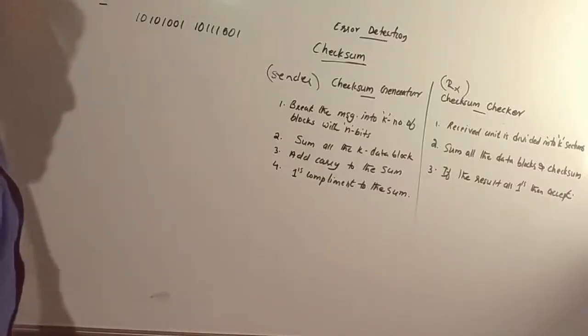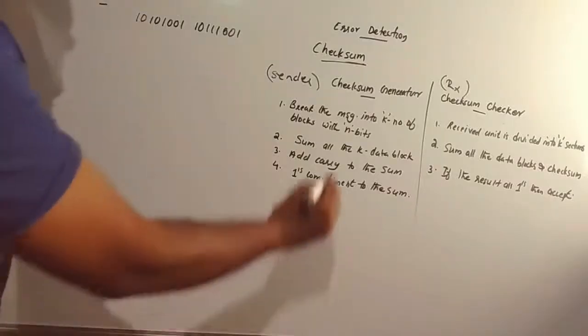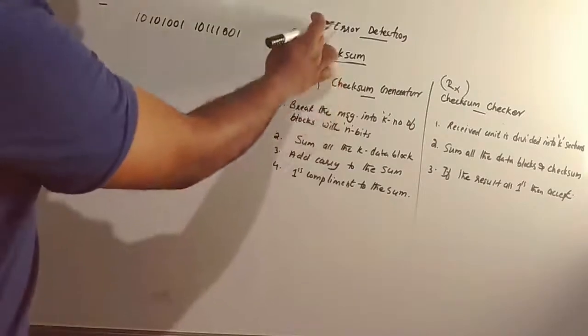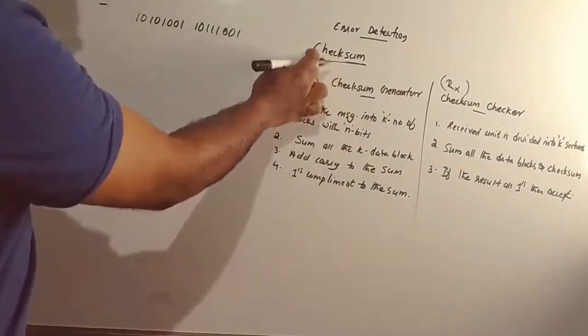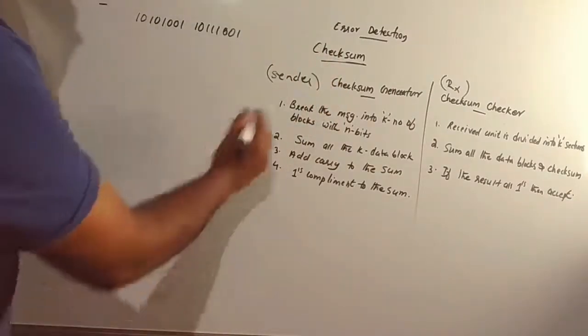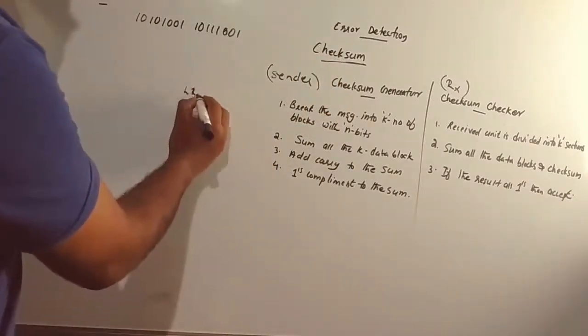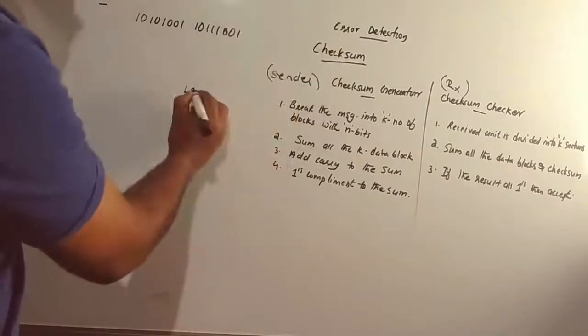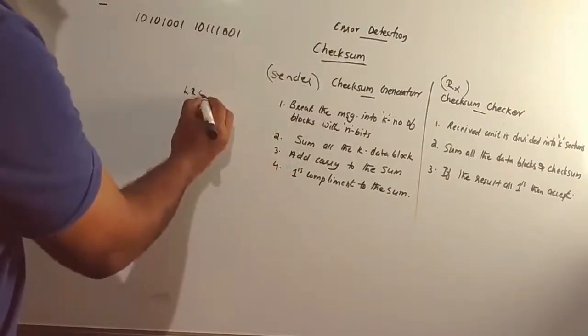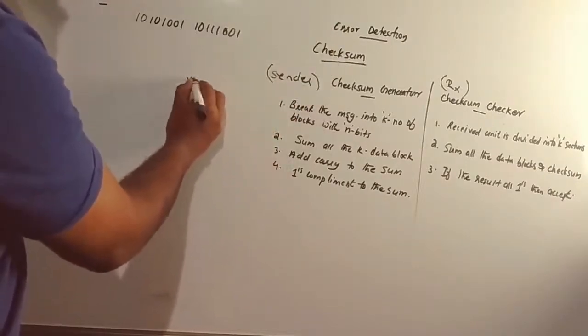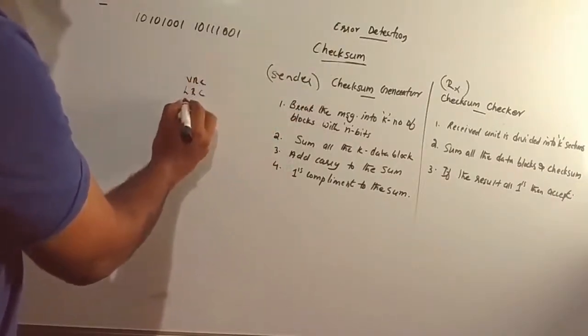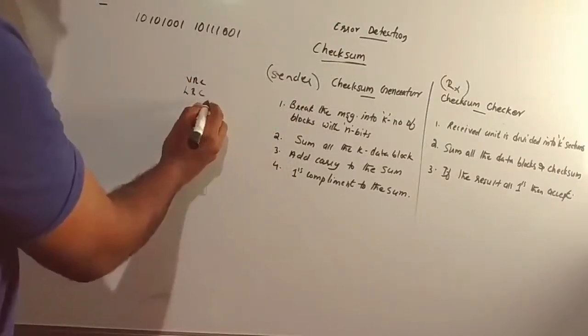Hello friends, welcome to DK Academy. Today we will check some error detection mechanisms. In my previous session, we covered error detection mechanisms: vertical redundancy and longitudinal redundancy check.